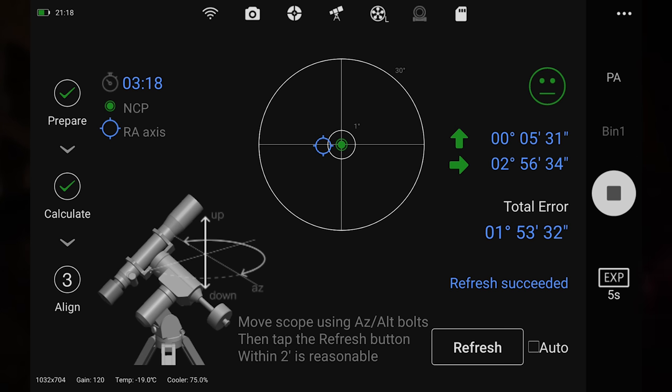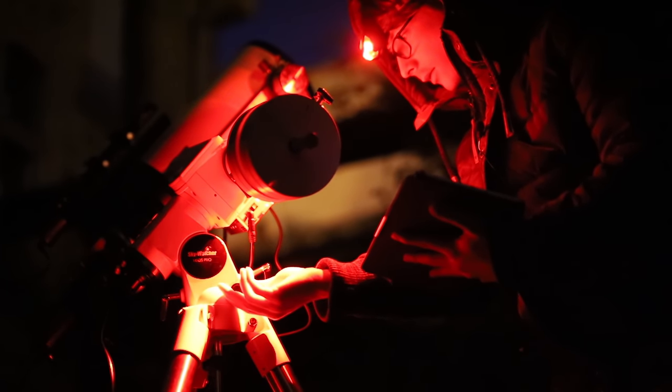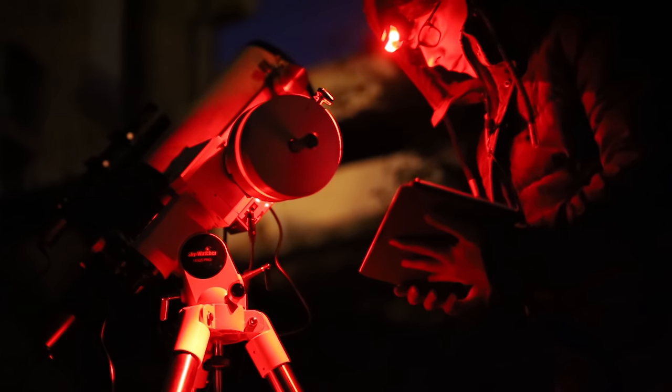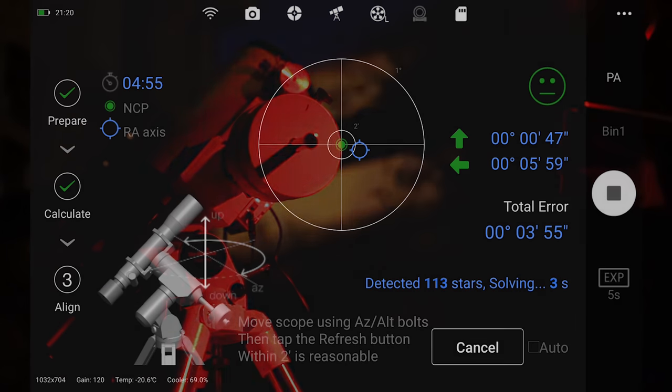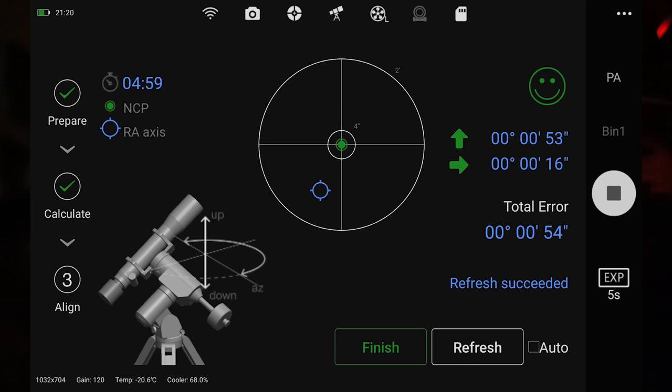I will now turn the bolts on the mount. I need to move to the right. So loosen the left and tighten the right. Just a tiny bit, refresh. And so on and so forth, until I'm happy with this polar alignment.